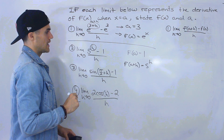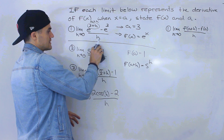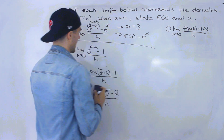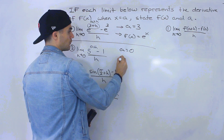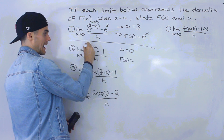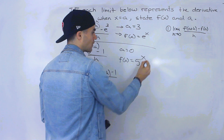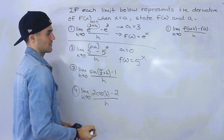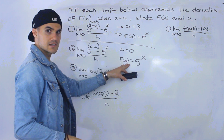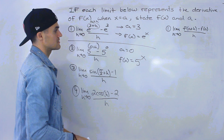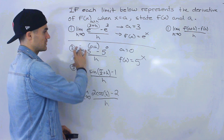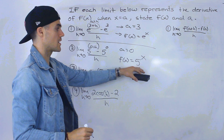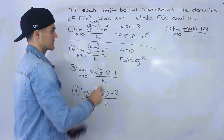This h by itself we can rewrite as (0+h). So the a value would be zero. The function would be 5 to the power of x, and notice 5 to the power of zero gives us 1 — so that minus 1 can be rewritten as minus 5 to the power of zero. That makes it obvious that the function is 5^x and the a value is zero, since (0+h) is just h. Be on the lookout for these kinds of limits where h appears alone in the exponent.